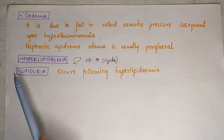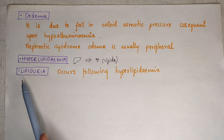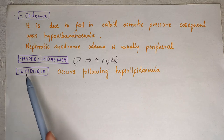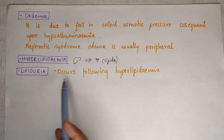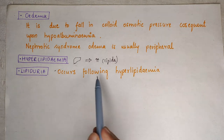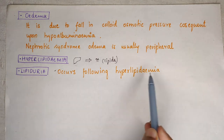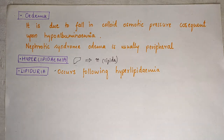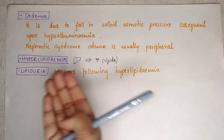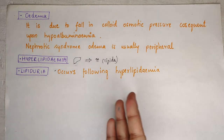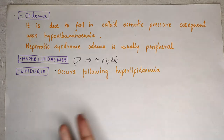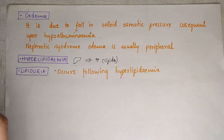Lipiduria follows hyperlipidemia — due to leakage through the basement membrane, lipids also appear in the urine as the body tries to excrete the excess.